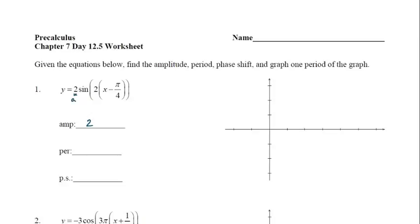To find the amplitude of a sine function, look at the number out in front of the function. In this case it's a 2, so the amplitude is 2. Even if that were negative, the amplitude is always the absolute value of the number in front. The period would be 2π divided by my b value, and in this function my b value is the number in front of x. So it would be 2π divided by 2, which tells me my period is π.